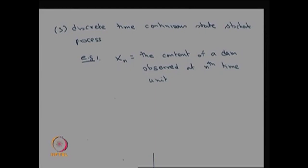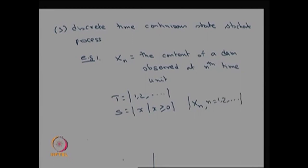That content is a real quantity. Therefore, the capital T — since you are observing only at discrete time units such as every hour, daily, or weekly — can be put in one-to-one correspondence with countably finite or countably infinite numbers. The state space S, being the water content of a dam, is a real quantity, so x is always greater than or equal to 0. Therefore, this stochastic process {X_n, n = 1, 2, 3, ...} forms a discrete time, continuous state stochastic process.